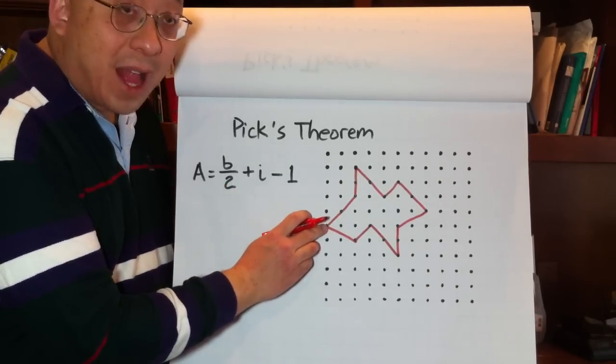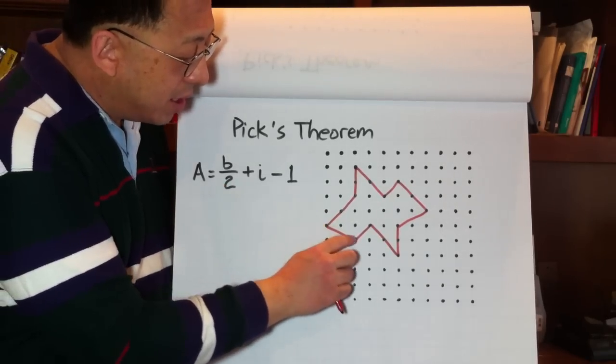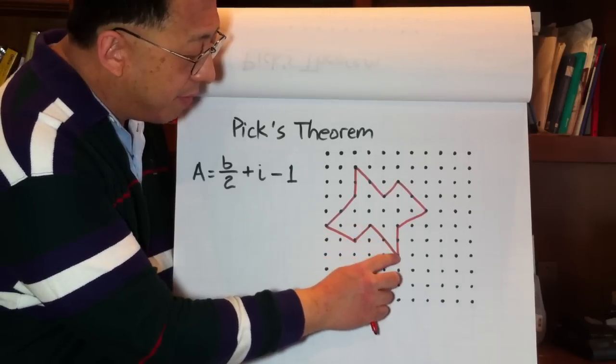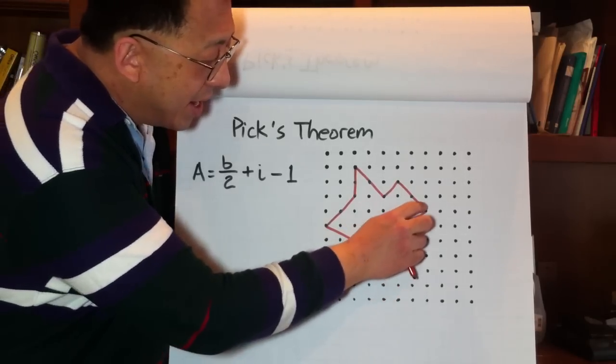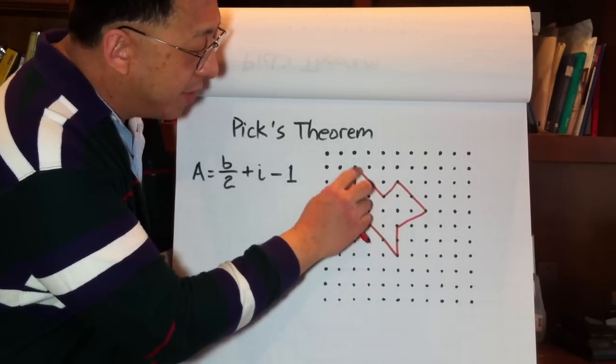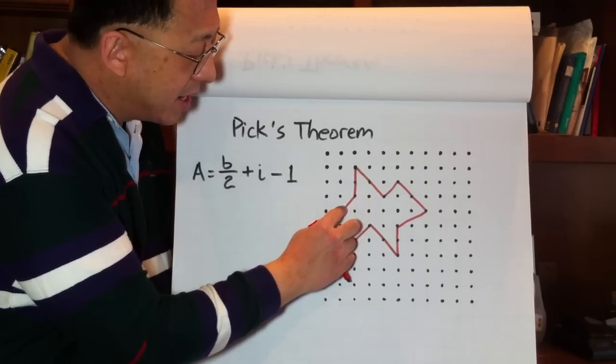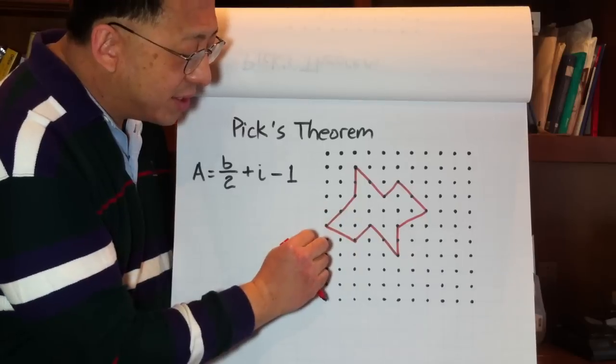We're going to count the number of lattice points on the boundary. 1, 2, 3, 4, 5, 6, 7, 8, 9, 10, 11, 12, 13, 14, 15, 16. I believe it's just 16.